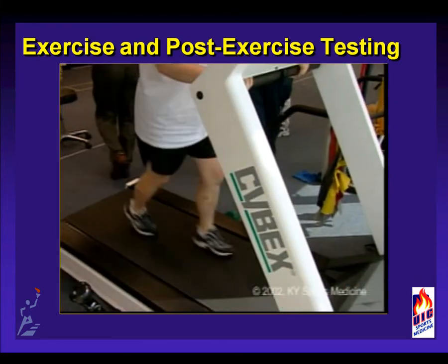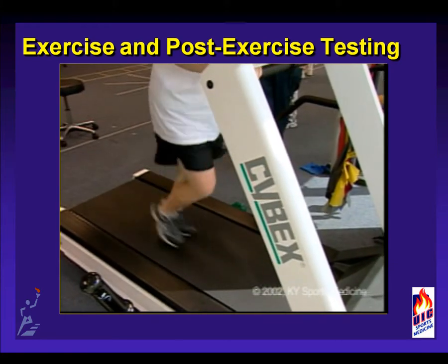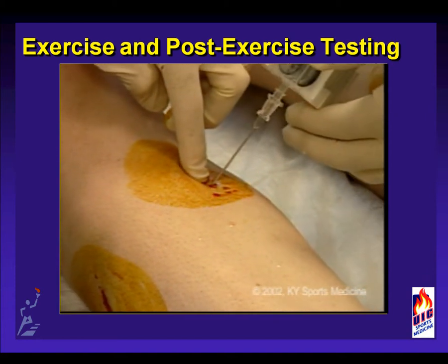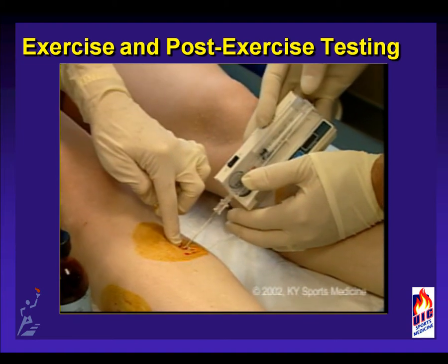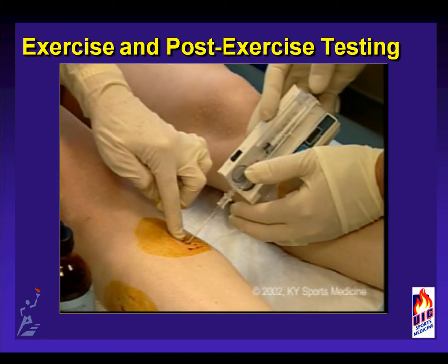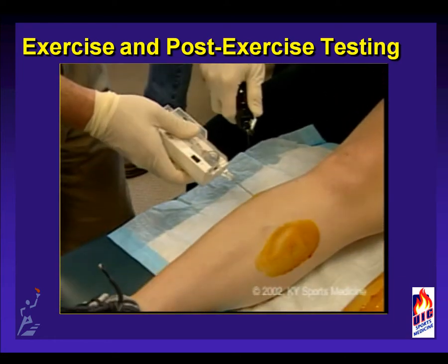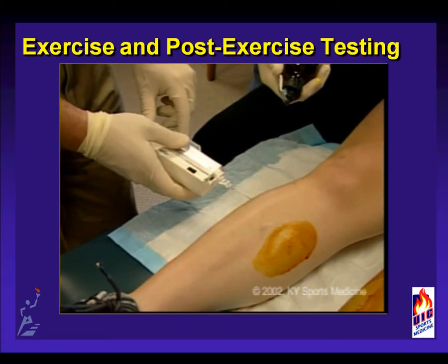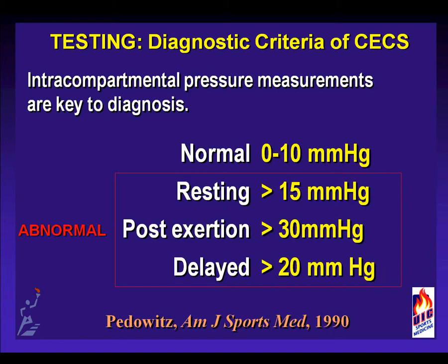The athlete is asked to exercise on a treadmill and then returns immediately to the clinic for retesting. The skin is re-anesthetized with ethyl chloride or lidocaine and compartment testing is repeated. An increase in pressures by 15 mmHg is suggestive of compartment syndrome. The athlete must have reached a level of symptoms or the test is not conclusive. To summarize: at rest, compartment pressures should be less than 15 mmHg. Elevation up to 25 or 30 is considered positive. A delayed 5-minute repeat examination that still remains over 20 is considered elevated and indicative of chronic exertional compartment syndrome.